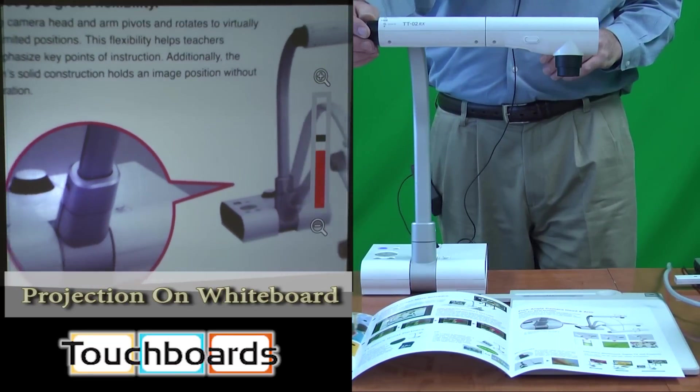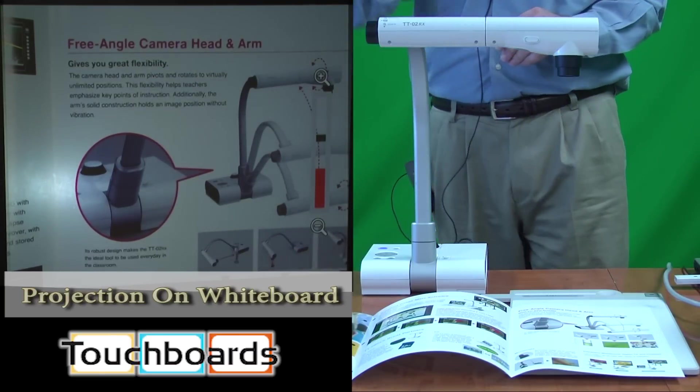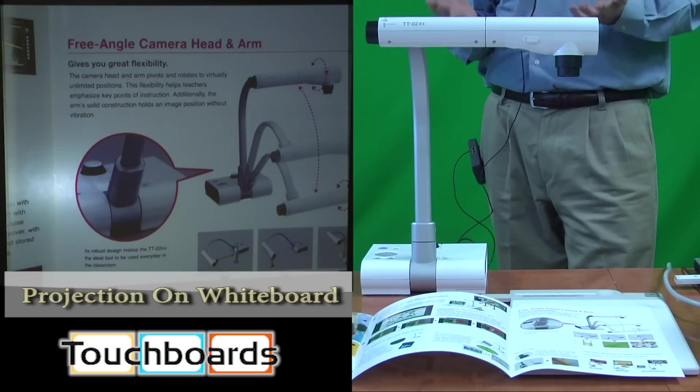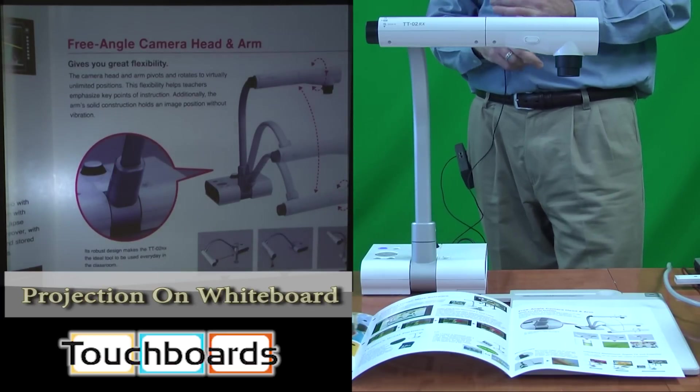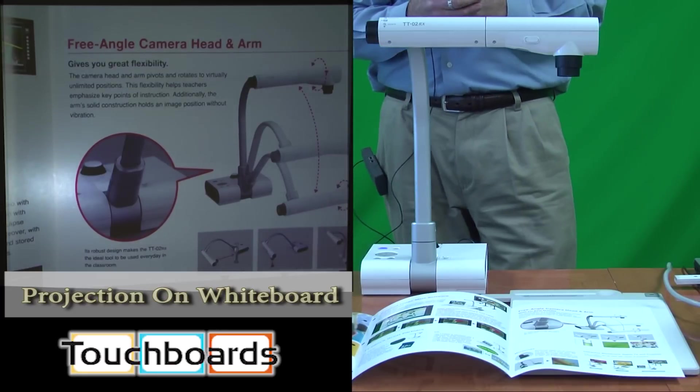Very easy to focus. We can simply press the little orange button on the end here. You'll see AF comes up on the screen, that's autofocus, and it will refocus itself. The unit is pretty much self-sustaining as far as the image quality. It has auto white balance, so there's not a lot of adjustments to make on the unit itself.